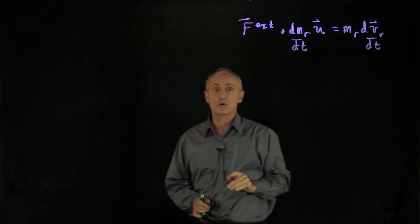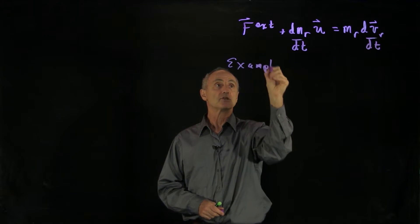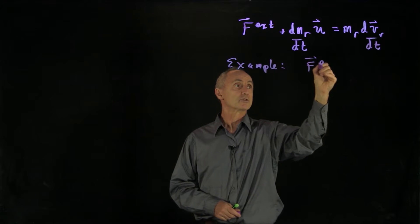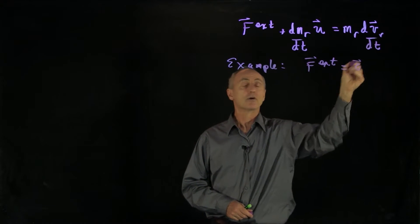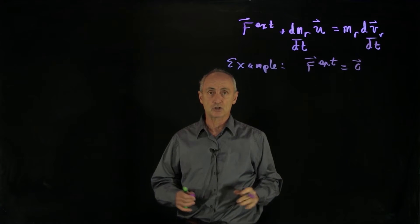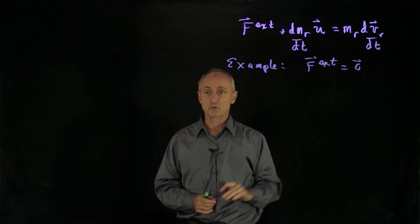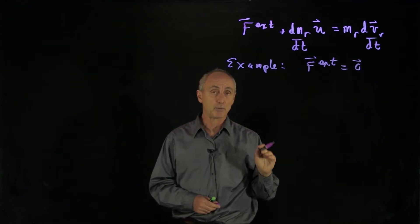And now we want to consider some special cases. So our first example will be a case when there's no external force. This might be characteristic of a rocket that's far away from any type of gravitational interaction and is either speeding up or slowing down. This is a special case that will enable us to understand our problem.